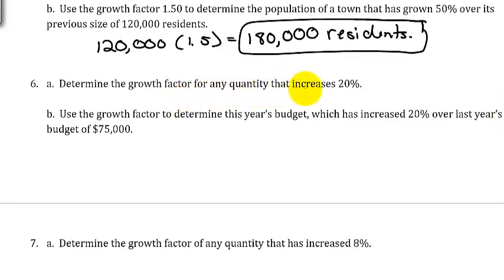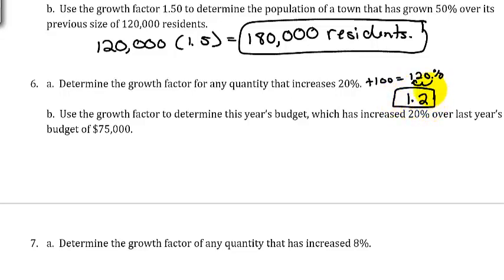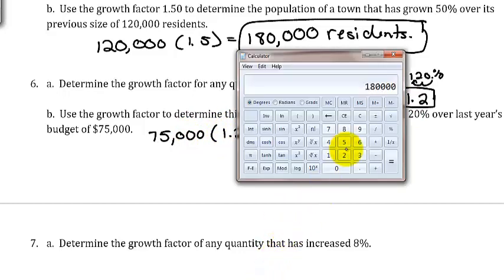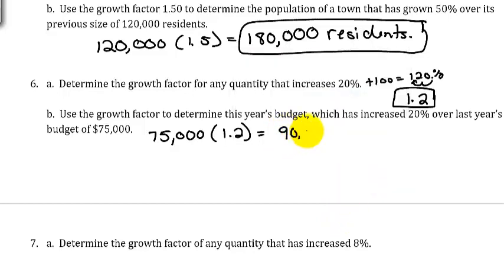Determine the growth factor for any quantity that increases 20%. Add 100 to get 120%, then convert to a decimal by moving the decimal point two positions to the left — giving a growth factor of 1.2. Use that growth factor to determine this year's budget, which increased 20% over last year's budget of $75,000: $75,000 times 1.2 gives us a new budget of $90,000.